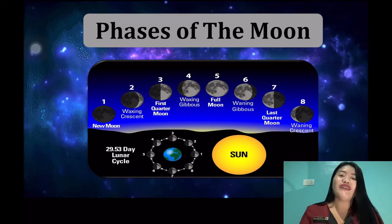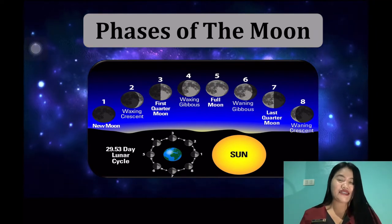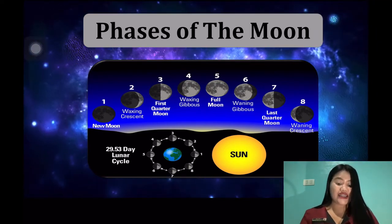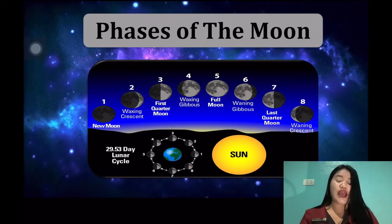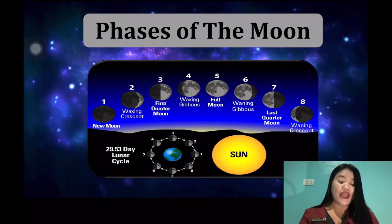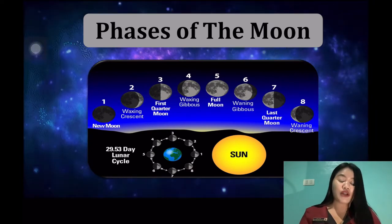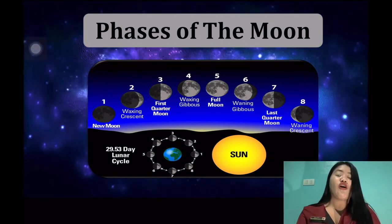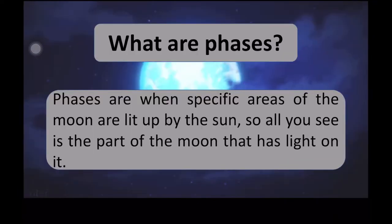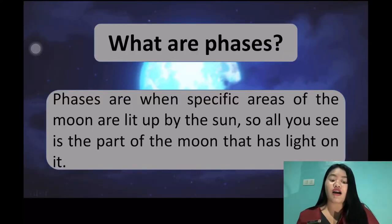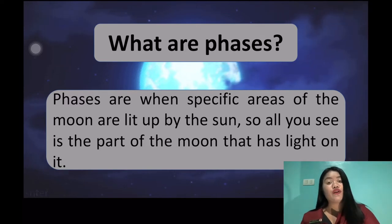Let's proceed to the different phases of the moon. We have the new moon, waxing crescent, first quarter moon, waxing gibbous, full moon, waning gibbous, last quarter moon, and the waning crescent. What are phases? Phases are when specific areas of the moon are lit up by the sun, so all you can see is the part of the moon that has light on it.